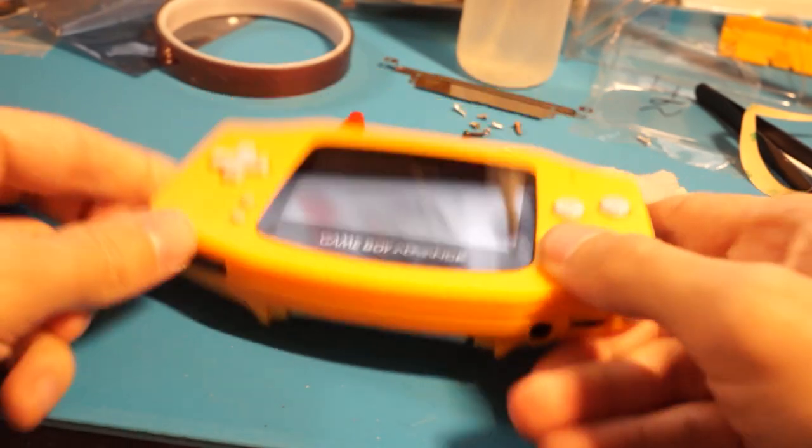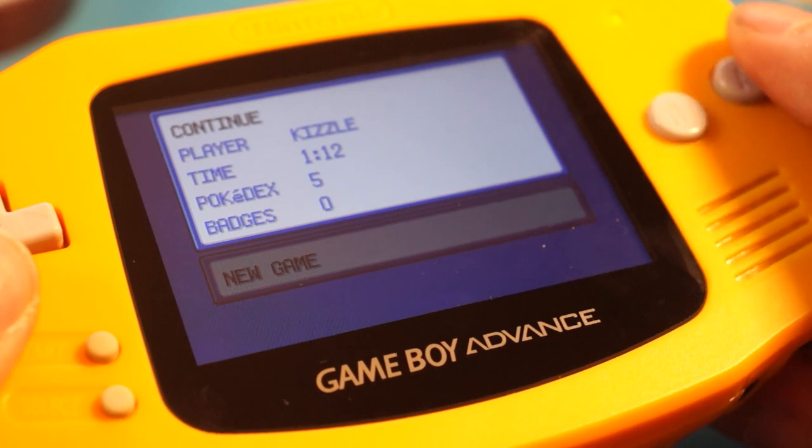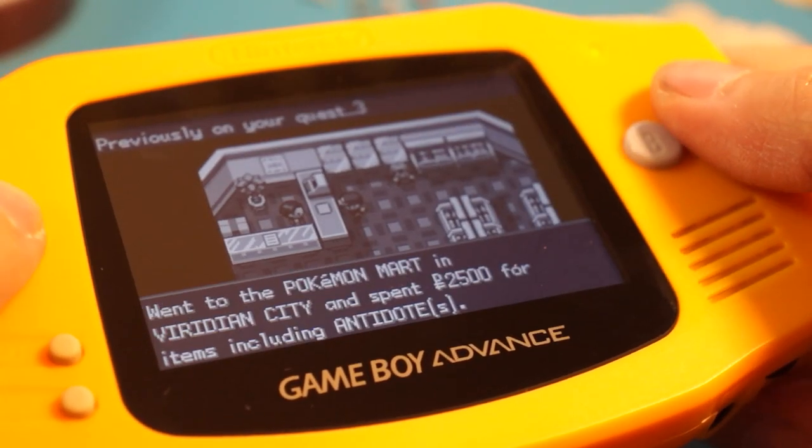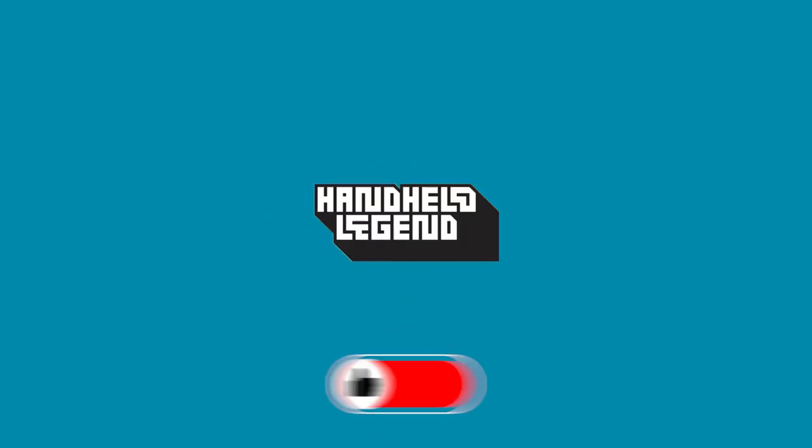And that's it! If everything is functioning as expected, you can go ahead and fully reassemble your Game Boy Console. If you're experiencing any issues with your install, reach out to our support team at support at handheldlegend.com or check out the troubleshooting guide linked in the description.